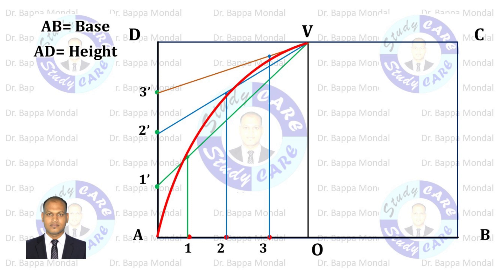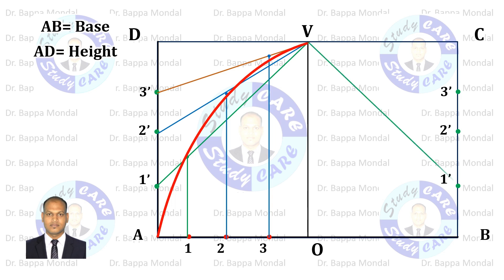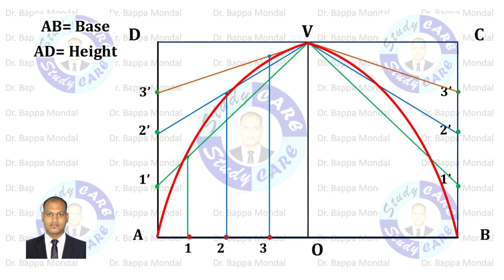Now in a similar way, divide line CB with the same number of equal parts and give names 1, 2, 3. Connect V1, V2, V3, and so on. In this way, the other half of the parabola will be completed.